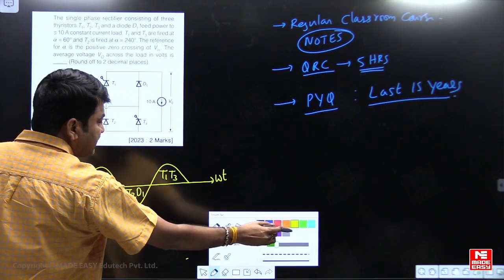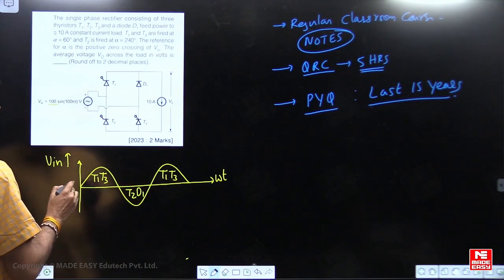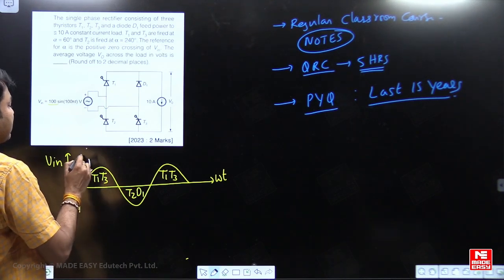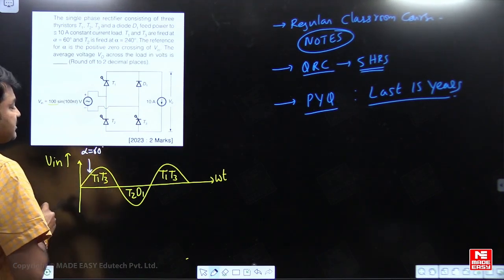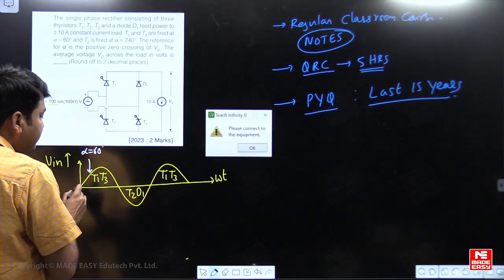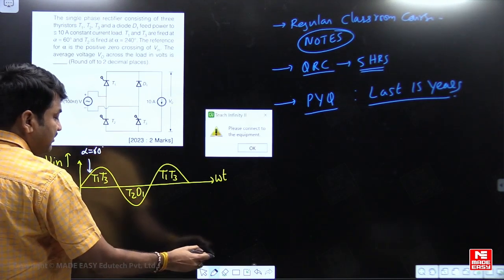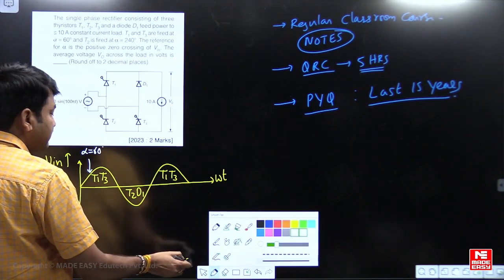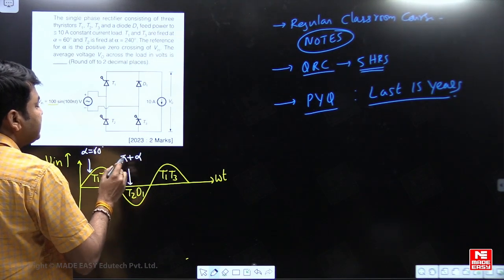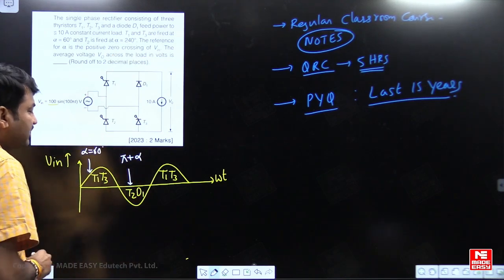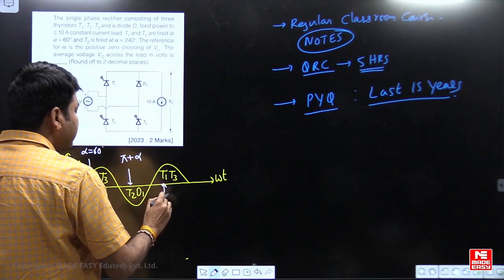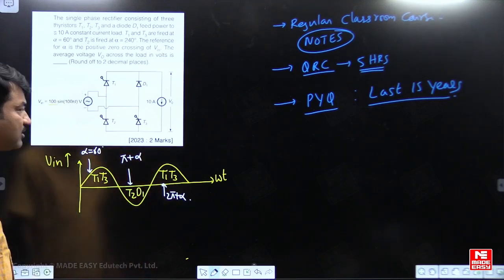In the negative cycle, the two diagonal elements T2 and D1 are forward biased. The gate signal for thyristor T1 and T3 is given at alpha equal to 60 degrees with reference to the zero crossing point. For thyristor T2, the gate signal is given at 240 degrees — that is pi plus alpha (180 plus 60 equals 240). So it is at pi plus alpha for T2, and for T1 and T3 the next gate signal is given at 2pi plus alpha.